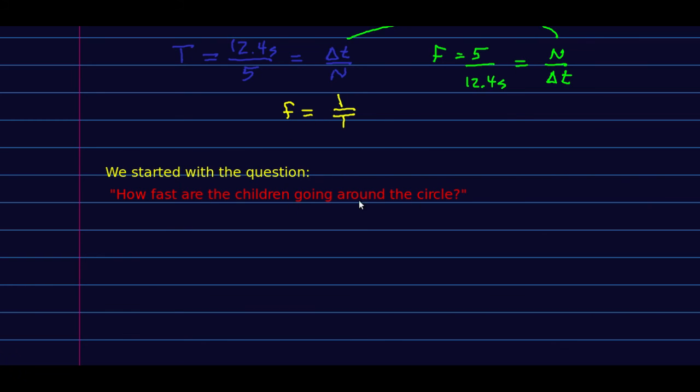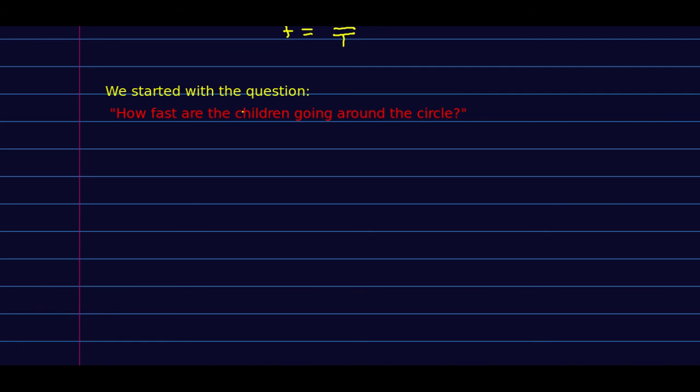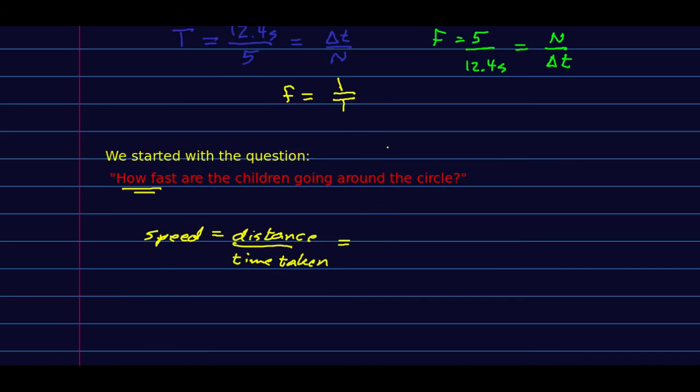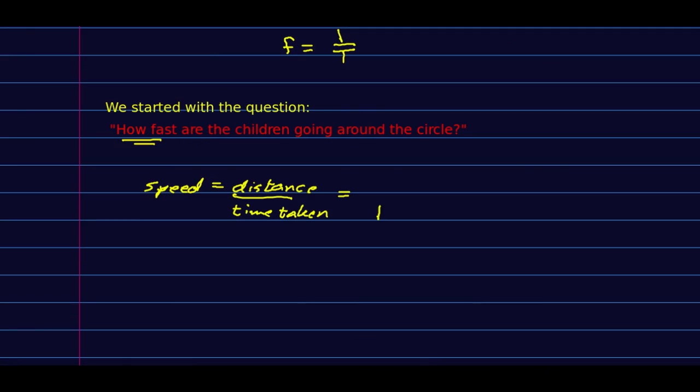We started with this question, how fast are the children going around the circle? And we found two ways to express how often they make a complete trip. But of course, we've just spent a whole bunch of this course on things like speed as ways of measuring how fast. So let's look at the speed of these children. Well, a speed, we know their velocity is changing constantly, but their speed isn't. And it's a distance covered per time taken. Well, that we know, although we'll have to work a little bit. The time taken, well, we could say we know the amount of time it takes them to go around the circle once. That's the period. How far have they gone in that time? Well, they've gone the circumference of the circle. So that's 2 pi times the radius.